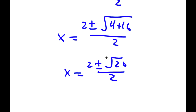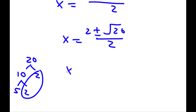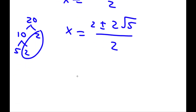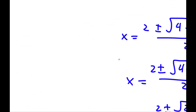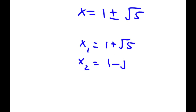Now we can simplify the radical. 20 is the same as 10 times 2, and 10 is 5 times 2, so the 2 comes outside giving 2 root 5. So I have 2 plus or minus 2 root 5 over 2. Dividing both terms by 2 gives 1 plus or minus square root of 5. So my two solutions are x equals 1 plus the square root of 5, and x equals 1 minus the square root of 5.